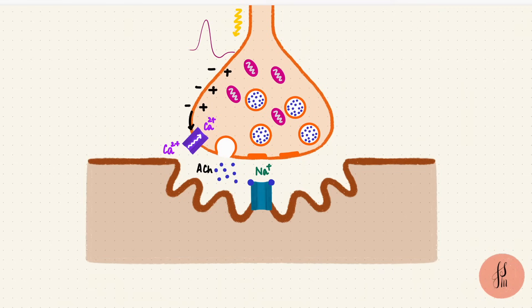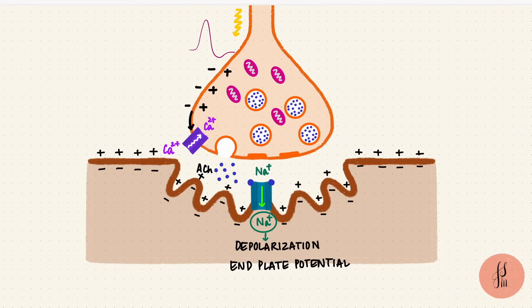When it does, sodium enters the cell and potassium leaves, but it's mainly sodium entering that we need here because that's causing depolarization. The potential becomes more positive. This is an end plate potential, which is an excitatory potential. End plate because this region is also called the motor end plate.